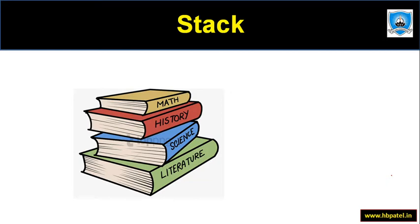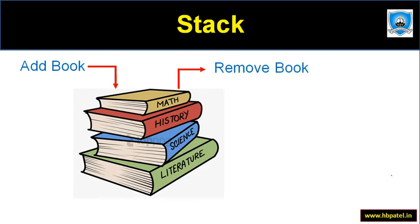At the bottom we have literature, then science, then history, and maths on top. If we want to add a book — say a drawing book — we put it on top of the maths book. And if we wish to remove a book, we remove from the top only; that is, the maths book is removed first. So addition as well as deletion will be done from the top of the stack.